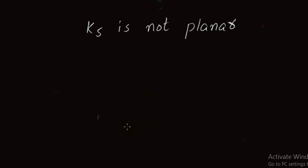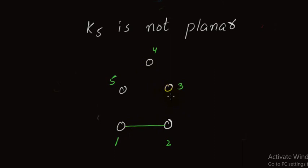Next we prove that K5 is non-planar — we cannot draw K5 on a plane. For K5 I take five vertices: vertex 1, vertex 2, vertex 3, vertex 4, and vertex 5. First I try to join these vertices without edge crossing. We can join 2 and 3, 3 and 4, 4 and 5, and 5 and 1 as boundary vertices. Now I can join vertex 5 and vertex 3 with no edge crossing, and we can also join 5 and 2 or 1 and 3.